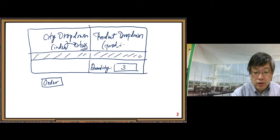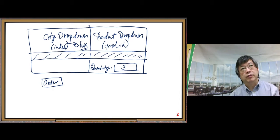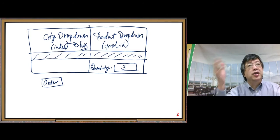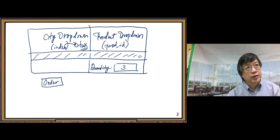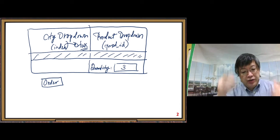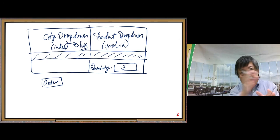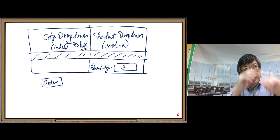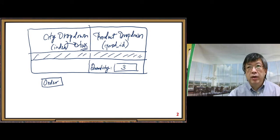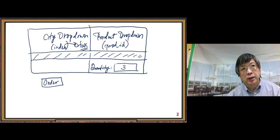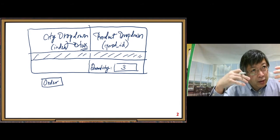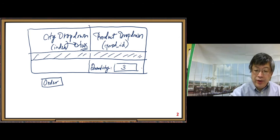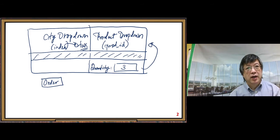The product ID is an integer. With this integer we can do a database query to get the price of the product, then calculate the amount of money for the order. We also calculate the tax and total tax. Quantity is also used for the calculation.